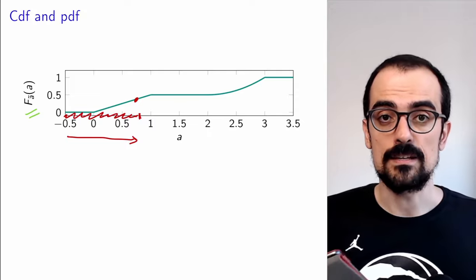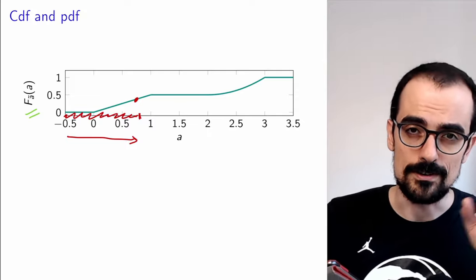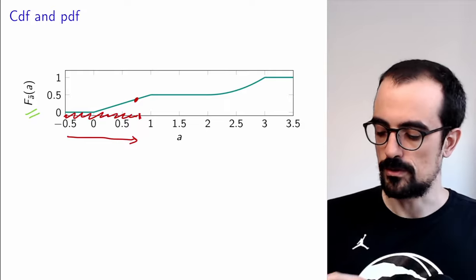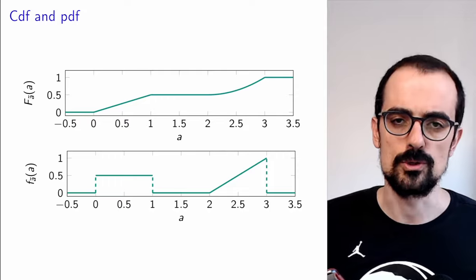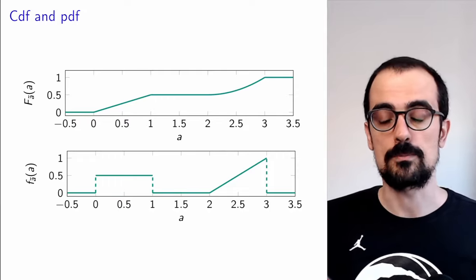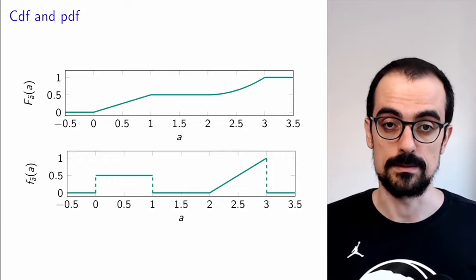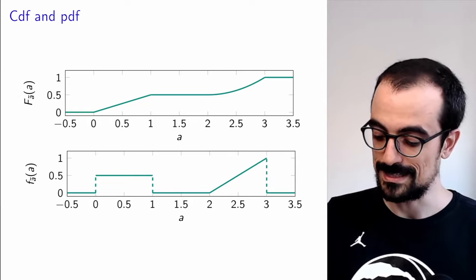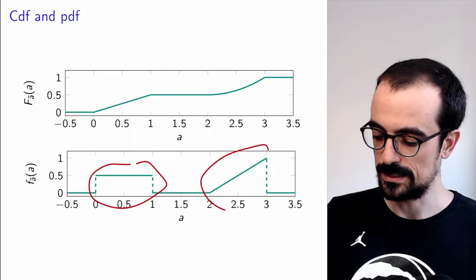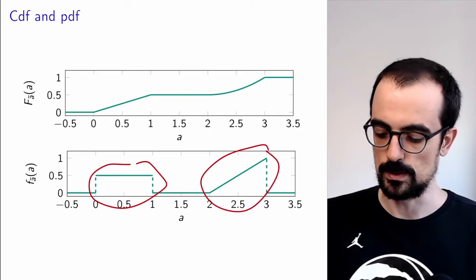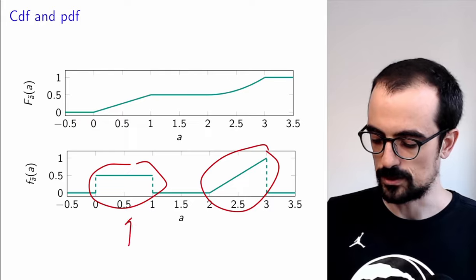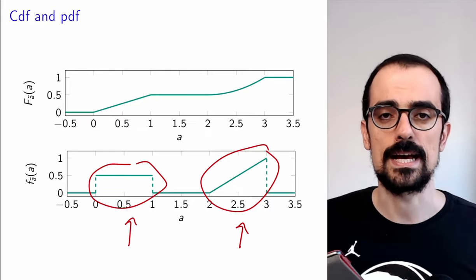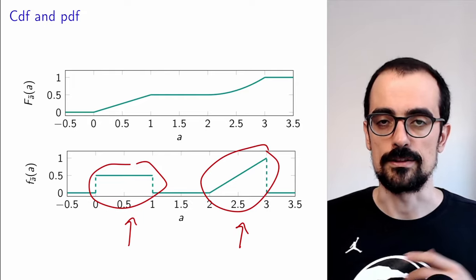As we discussed in the video on probability density, the CDF doesn't give you a very intuitive description of what is happening locally with the random variable. Because of that, we often use the probability density function to describe the behavior of random variables. That's the derivative of the CDF, and it tells us how much density of probability there is in each part of space. So if we start sampling the random variable, we're going to see values in the high-density regions.